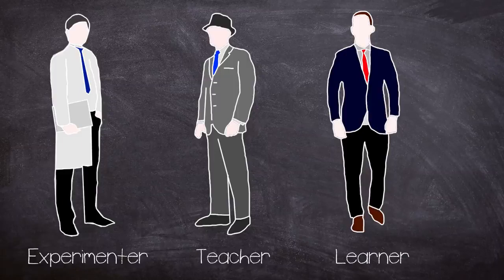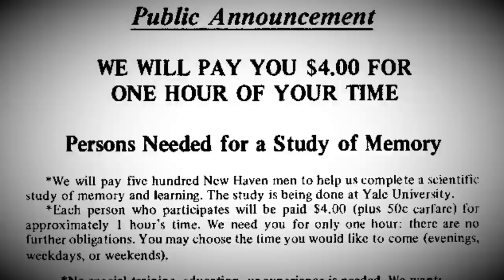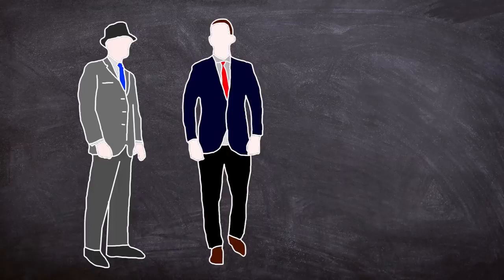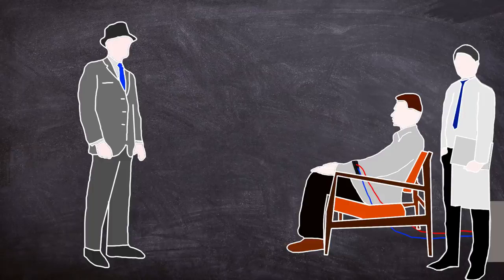Both the teacher and learner would arrive for the session together and they would draw straws as to who would take each role. Participants were sourced via a newspaper ad saying we will pay you for one hour of your time in a study of memory. The teacher and learner, after finding out their roles, were taken into a room where the learner was strapped into what appeared to be an electric chair, and electrode paste was applied to the learner's wrist to prevent blistering and burns.